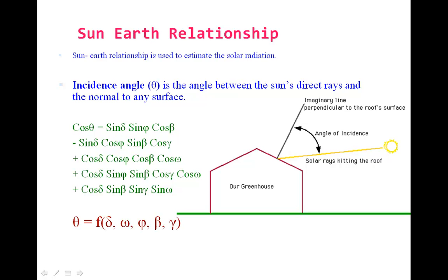Delta is the declination, the angle made by line joining sun and earth to equatorial plane. Omega is the hour angle measured from sunrise to sunset. Phi is the latitude of the place. Beta is the tilt angle of the collector to the horizontal surface. Gamma is the surface azimuth angle, that is the horizontal projection of the surface normal measured to the south line.